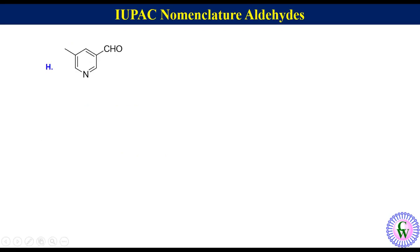Compound H — here also we have all three components: substituent, name of ring, and 'carbaldehyde'. In this molecule we need to specify the position of substituents, so we will have to number the ring. In this case, since the ring has a heteroatom nitrogen, the heteroatom takes priority over CHO. So the heteroatom gets number 1, and then the ring carbon bearing CHO gets the lowest possible number. Thus the numbering will be 1, 2, 3, 4, 5, and 6.